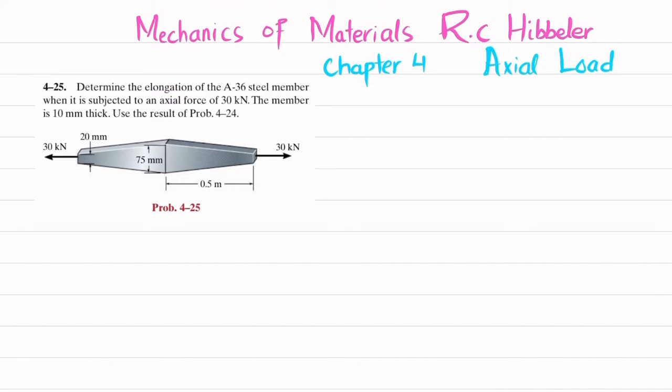Let's start with the solution. First we will write the given data. We have been given that this is an A36 steel member that is subjected to axial load P, which is equal to 30 kilonewtons. Thickness t is given as...